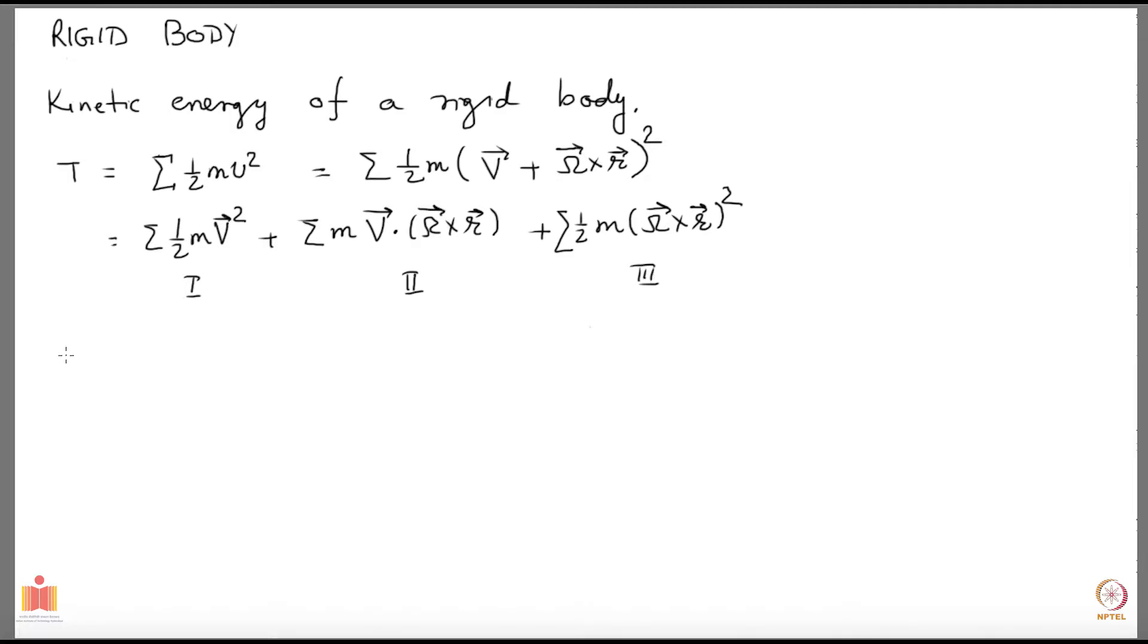Let us look at the first term. You see the capital V can come out of the summation because that does not carry any label telling which point it is in the rigid body. So this is a constant which will come out and the summation over m would become the total mass. So the first term becomes half mu v square. Mu is the total mass not the reduced mass.